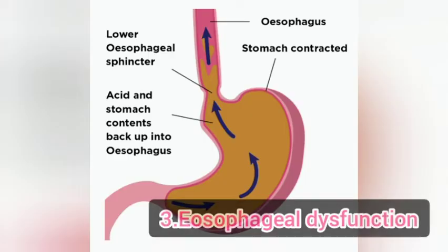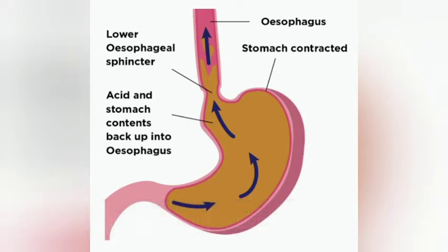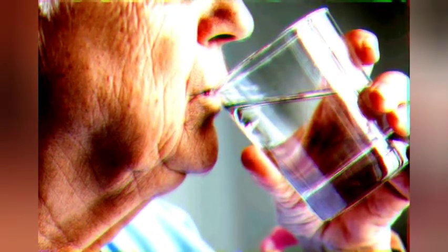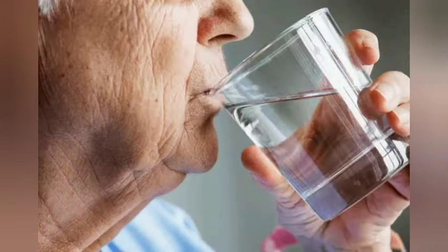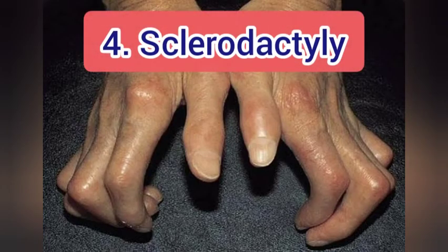Number 3: E for esophageal dysfunction — that may include acid reflux and decreased motility of the esophagus. People often state that they must drink liquid to swallow solid food.